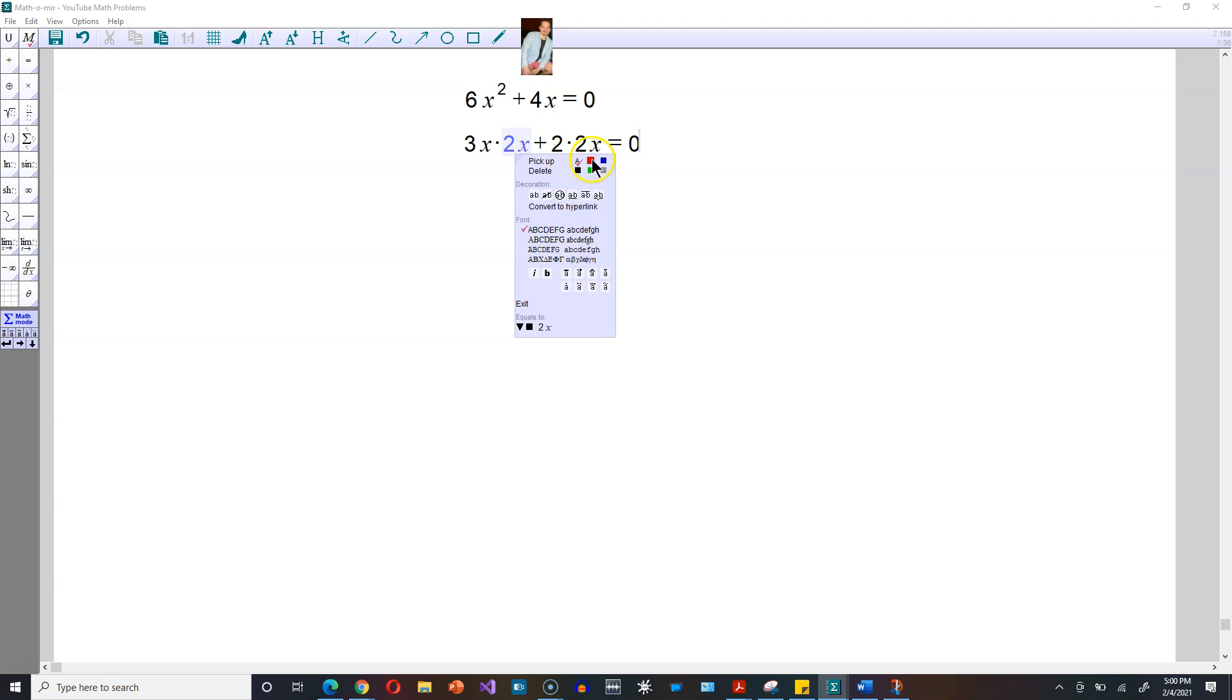Now observe that between these, there are two alike. This is 2x over here, and there's a 2x over here. That 2x in red, you can then pull outside a parenthesis this way. And what's left within the parenthesis is the other part of 3x, and then that other 2 there in black, and this is then set equal to 0.